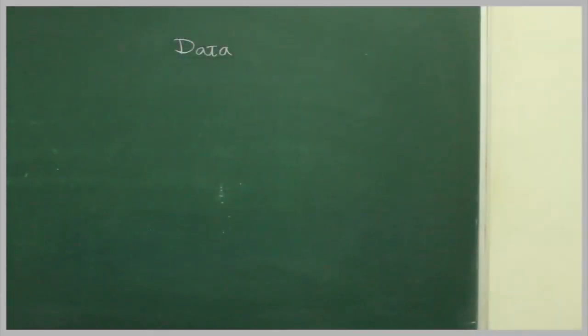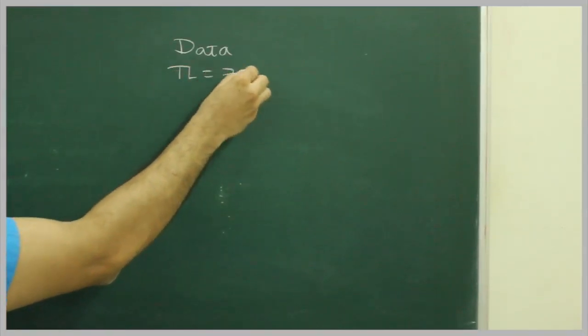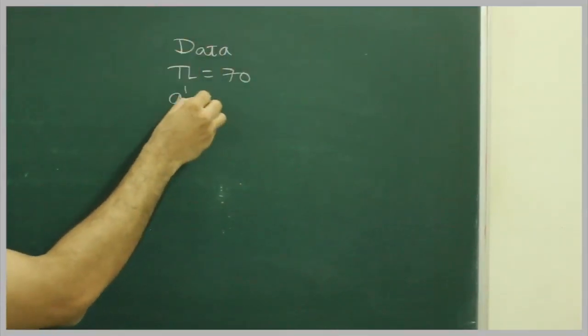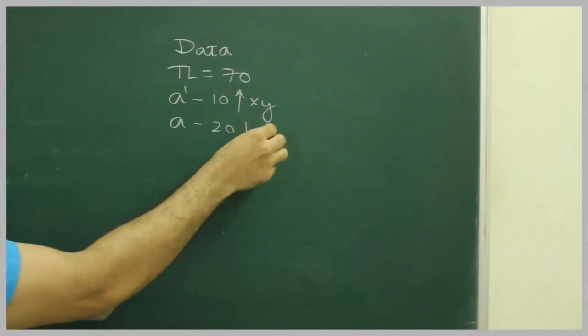So, first we will write data: true length 70 mm, A dash 10 mm above x-y line, A 20 below x-y line.